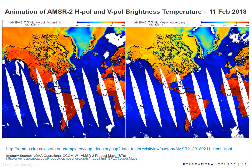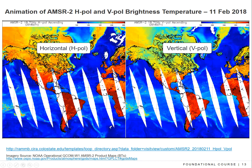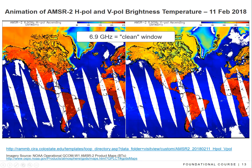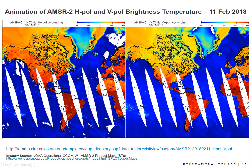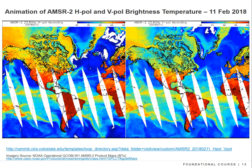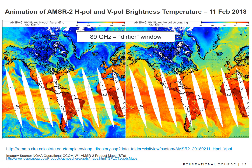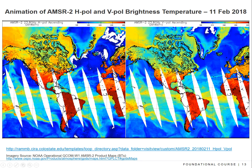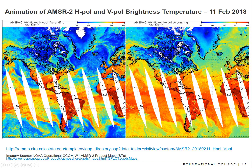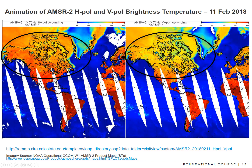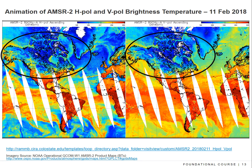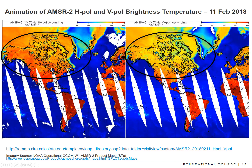An animation of AMSR2 imagery compares horizontal and vertical polarization, showing how the clean window channel at 6 GHz moves towards a dirtier window at 89 GHz. The horizontal polarization cold end shows a larger change than vertical polarization. The northern US and Canada show progression to colder temperatures with higher frequency, helping tease out information on snow depth and snow water equivalents.